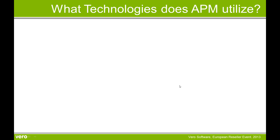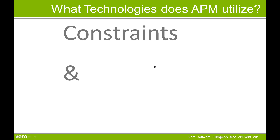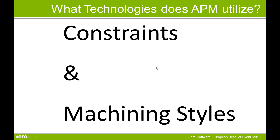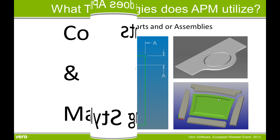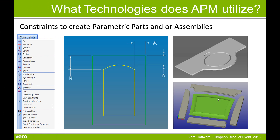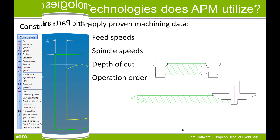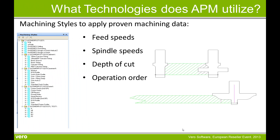What technologies does APM utilise? They are constraints and machining styles. Constraints are used to create parametric parts and or parametric assemblies, and machining styles to apply proven machining data such as feed speeds, spindle speeds, depth of cut and operation order.